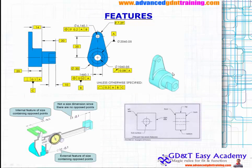If you see this particular figure, this particular slot you cannot measure directly. But this particular internal diameter you can measure, as well as this length of this particular hub — you can also measure the thickness. However, this slot projected outside is not a feature of size in the same way, so let me explain that in a better way.